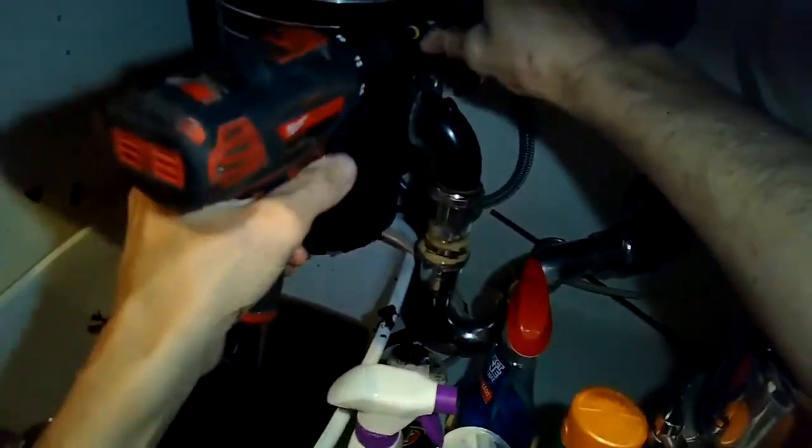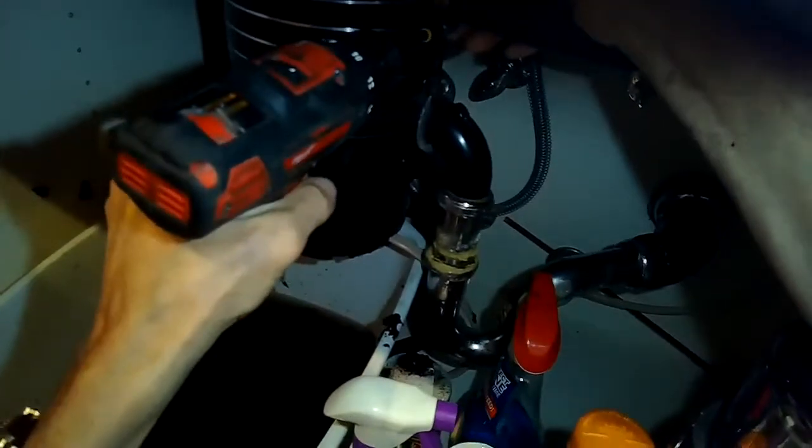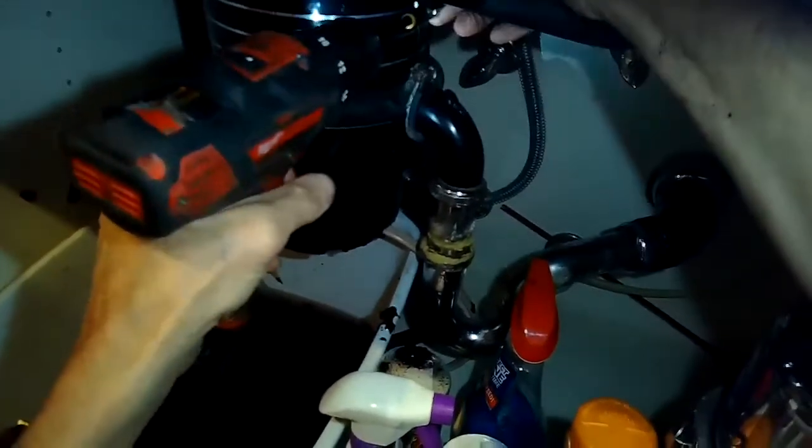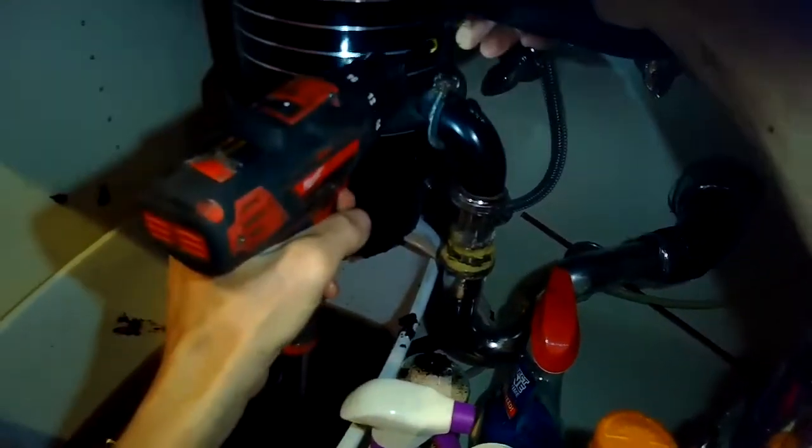And it's a common problem where water comes out of the air gap, but it's just due to the hose that goes between the air gap and the disposer being either somewhat occluded or fully occluded where water can't pass through. And it'll go out the next possible point and that's the air gap.